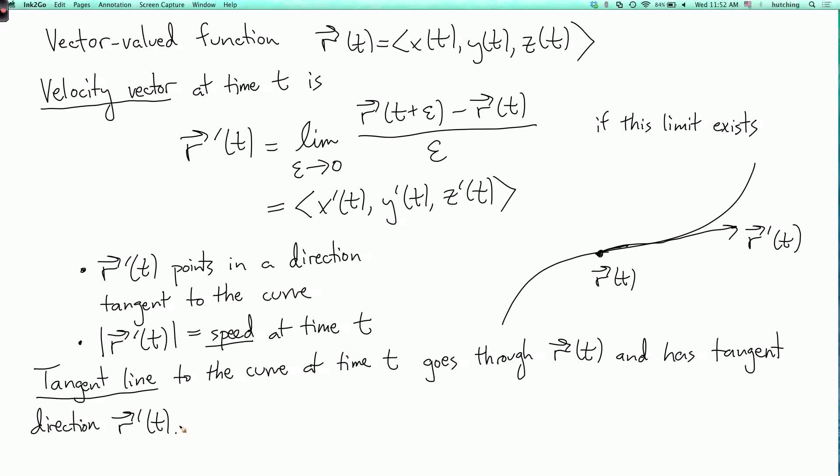So the equation for this tangent line, well, I need a new parameter, so usually I use t for the parameter, but I'm already using t, so I'll use a new parameter, s. So the line, let's call this L of s, so this is the tangent line. So it is R of t plus s times R prime of t.